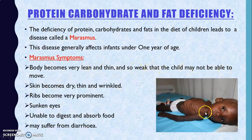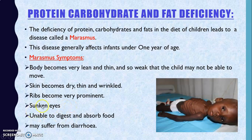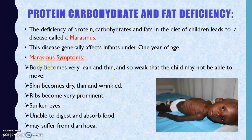Further symptoms of Marasmus include very dry, thin, and wrinkled skin, prominent ribs visible from outside, sunken eyes with deep hollows, and the child is unable to digest or absorb food properly. The child may also suffer from diarrhea. All these are symptoms of Marasmus, caused by deficiency of protein, carbohydrate, and fat.